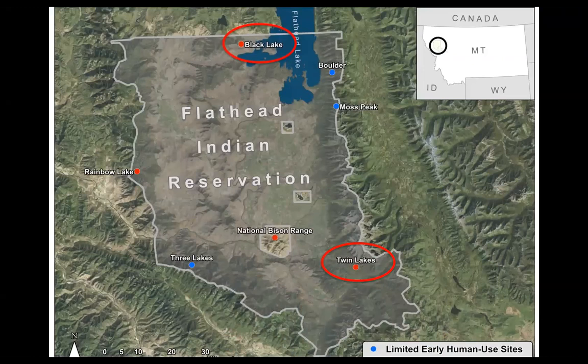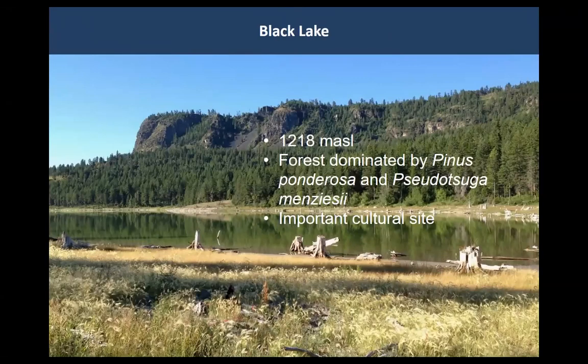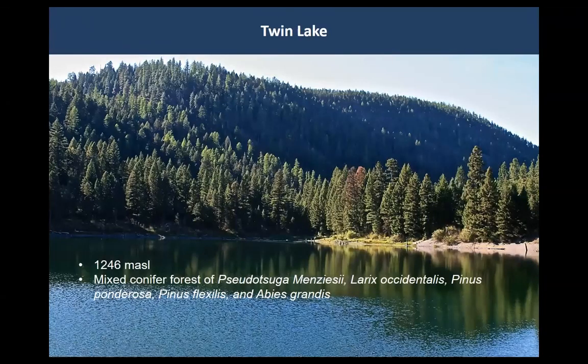I'll talk quickly about two sites: Black Lake and Twin Lakes. Both are low elevation lakes. Black Lake is dominated by ponderosa pine and Douglas fir, but also has larch and a little spruce — stumps along the water's edge suggest past lake level fluctuations. Twin Lakes is similarly a low elevation lake in a mixed conifer forest of Douglas fir, larch, ponderosa pine, grand fir, spruce, and limber pine — so all sorts of conifer diversity.